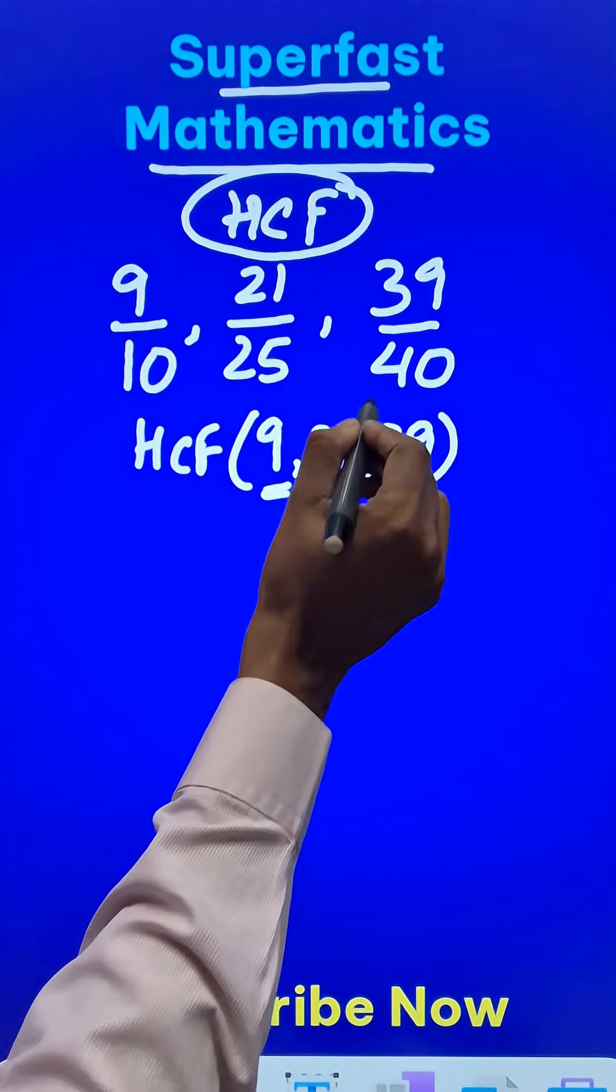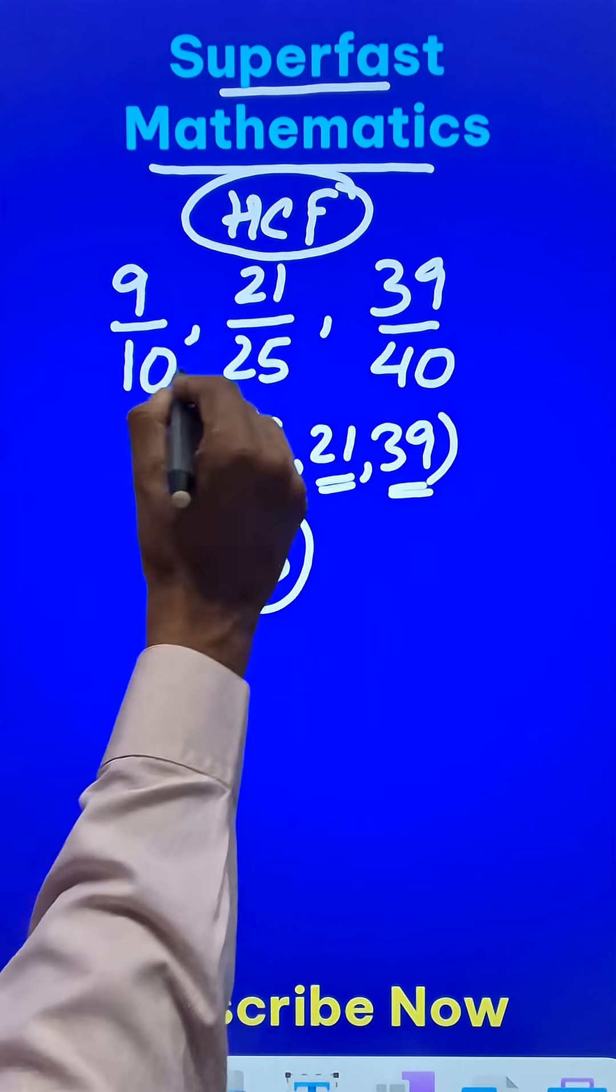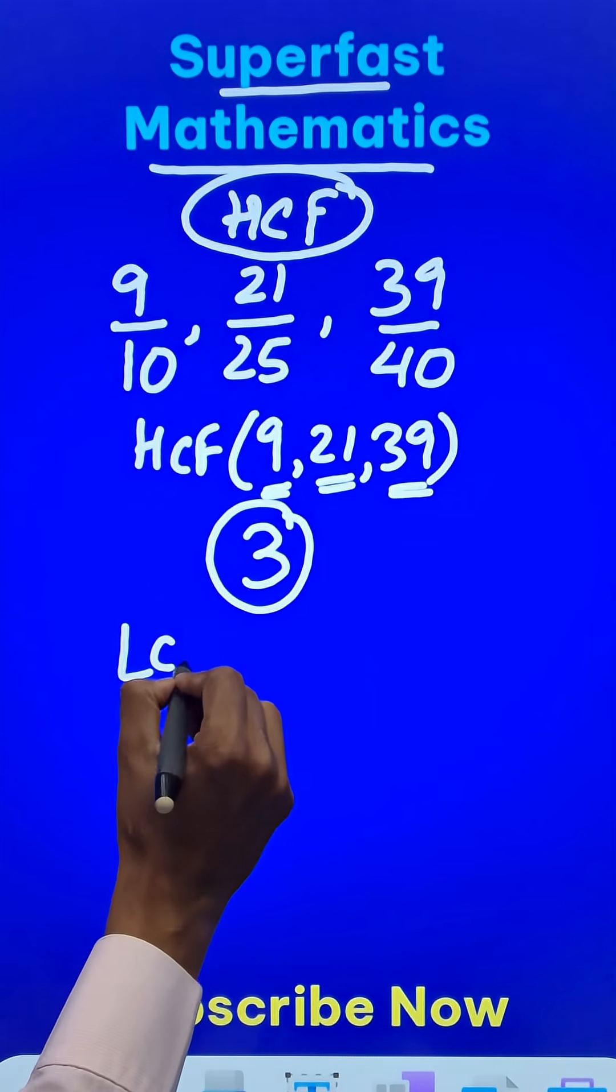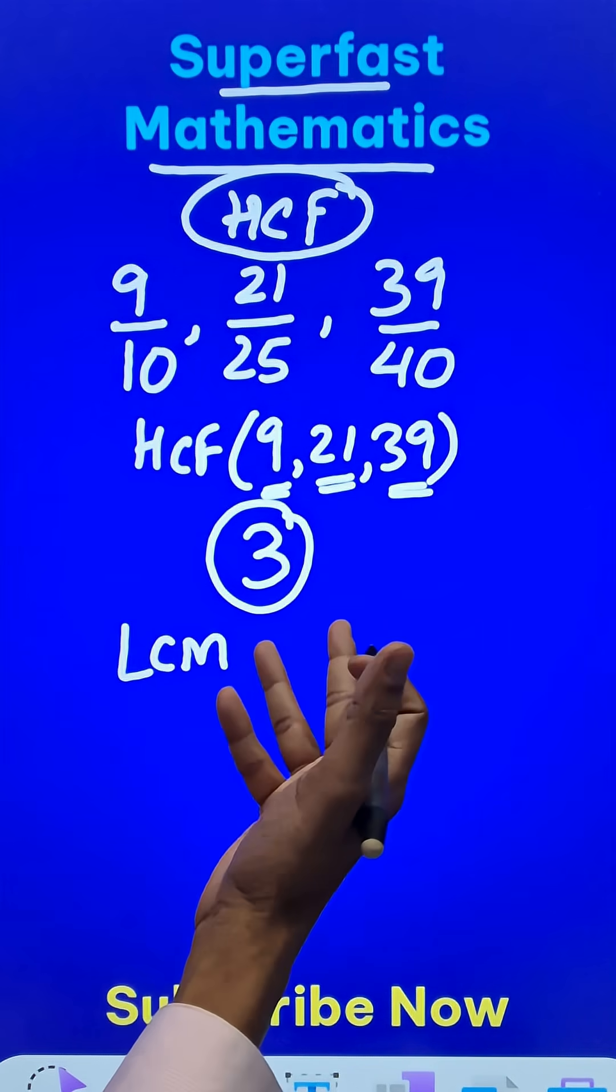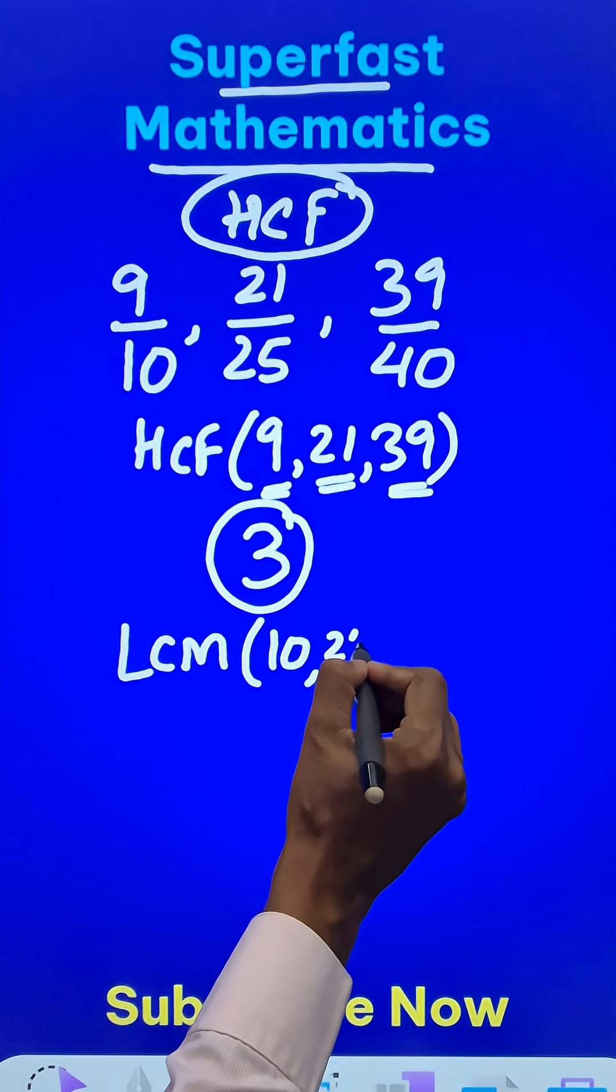So the highest common factor of the numerators is 3. And for the denominators, we have to find the lowest common multiple. So LCM of 10, 25, and 40.